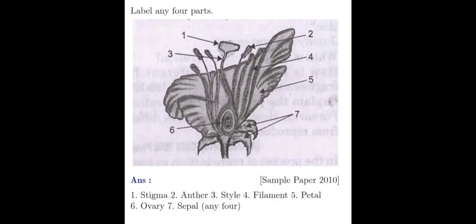Question number two. Label any four parts. Here the LS of flower is given and many parts are marked here but the question says that you can label any four parts. In such questions it's better to mark all the possible parts. So in this diagram number one is stigma, number two is anther, number three is the style, number four is the filament, number five is petal, number six is ovary, and number seven is sepal.